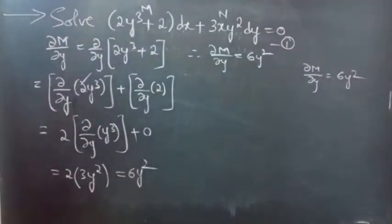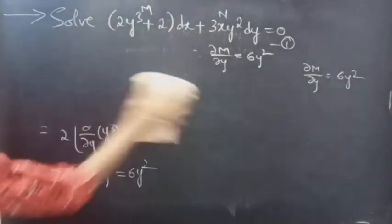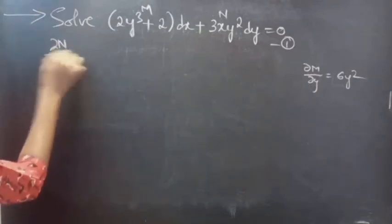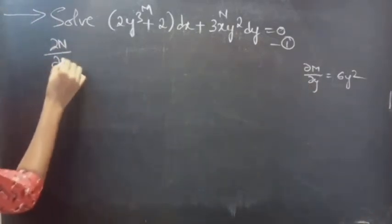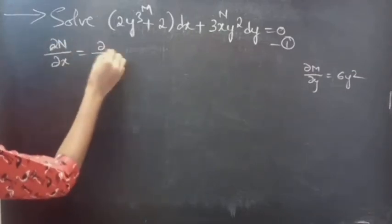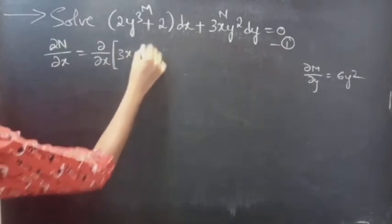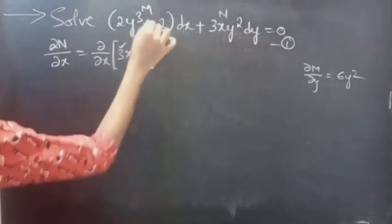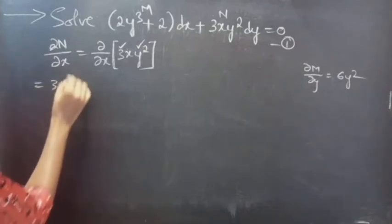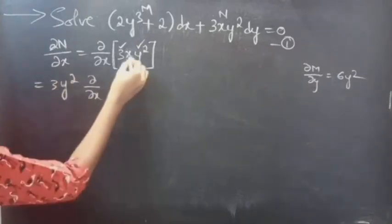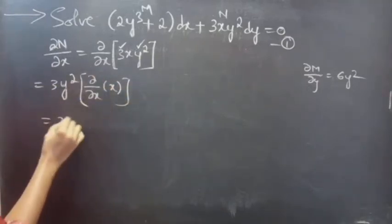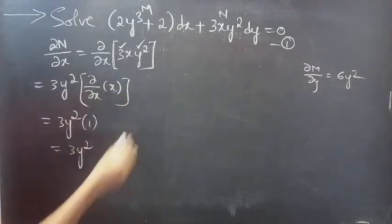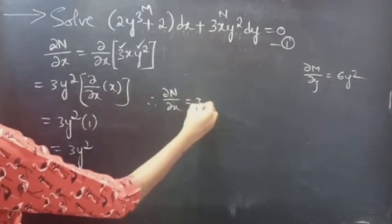Now let's find the partial derivative of N with respect to x. ∂N/∂x = ∂/∂x of (3xy²). Here we are doing partial derivative with respect to x, so y is treated as constant. This equals 3y² × (∂x/∂x) = 3y². Therefore, ∂N/∂x = 3y².